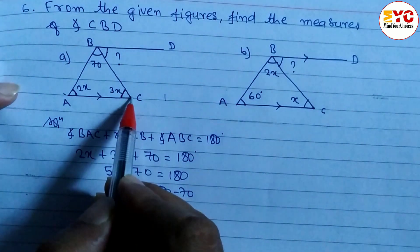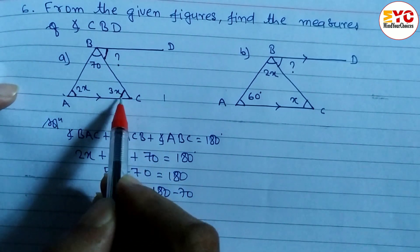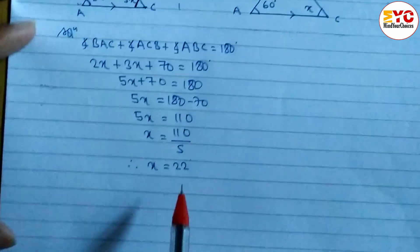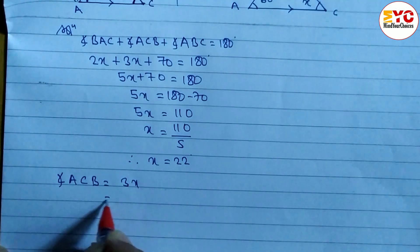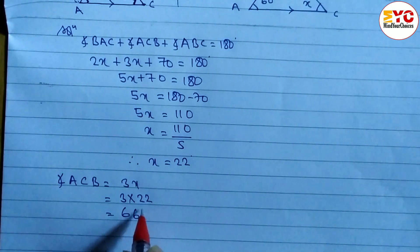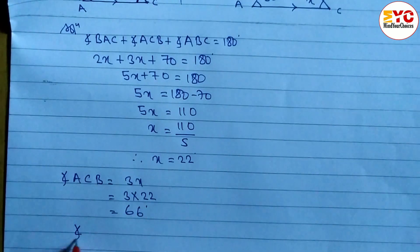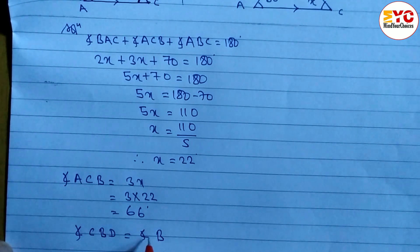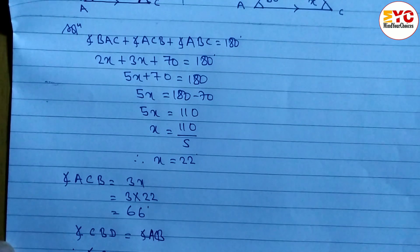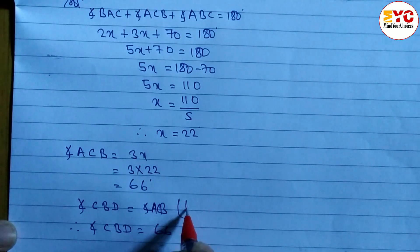Now we have to find out angle CBD. To find out this angle, we note that angle CBD and angle ACB are alternate angles. So let's find out angle ACB: it is equal to 3x. Putting the value of x, that is 3 into 22, we get 66 degrees. So angle ACB is 66 degrees, and therefore angle CBD is also 66 degrees, being alternate angles.